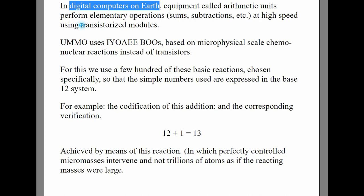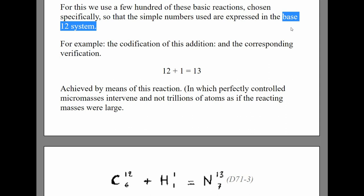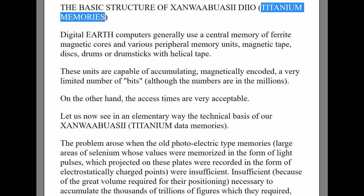In our digital computers, we use groups of transistors to do our calculations. For UMO computers, they use chemical reactions instead of transistors. They use 12 different symbols to count instead of our 10. And here is an example of their nuclear chemical reaction that is used for calculation.